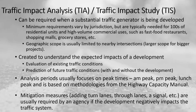In terms of mitigation measures — what happens if it's determined that there are negative impacts on the traffic or roadway system — those usually involve adding turn lanes, adding additional through lanes to help with capacity, or adding a traffic signal or other traffic control devices.